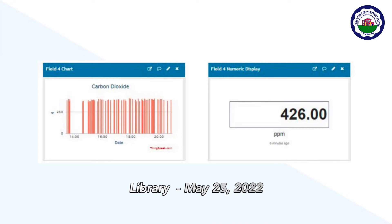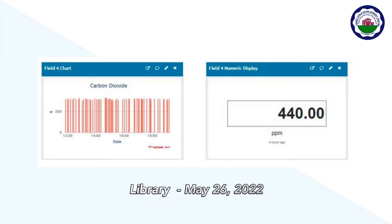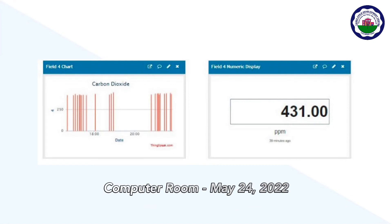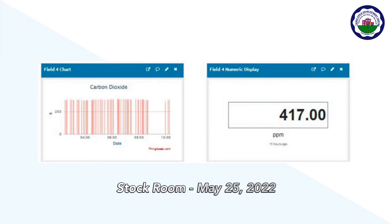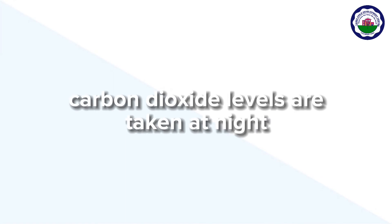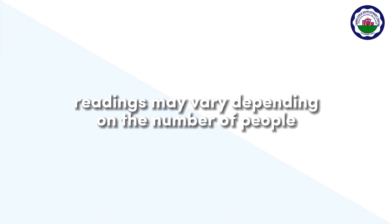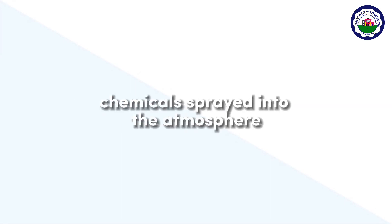Carbon dioxide levels in the library room varied from 426 to 440 parts per million, 431 to 440 parts per million in the computer room, and 417 to 449 parts per million in the stock room. There isn't much of a distinction between these levels in each room. Moreover, these carbon dioxide levels are taken at night when all of the monitored rooms are closed. Because humans emit carbon dioxide and scented particles travel through the air through a process known as diffusion, the readings may vary depending on the number of people present and the chemicals sprayed into the atmosphere.